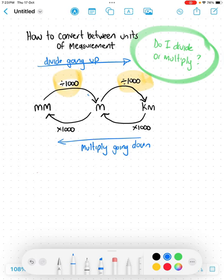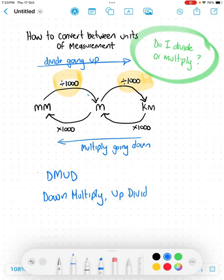So can we come up with a memory trigger? So the closest one I can come up with today is DMUD. Going down, you multiply. And then going up, you divide.